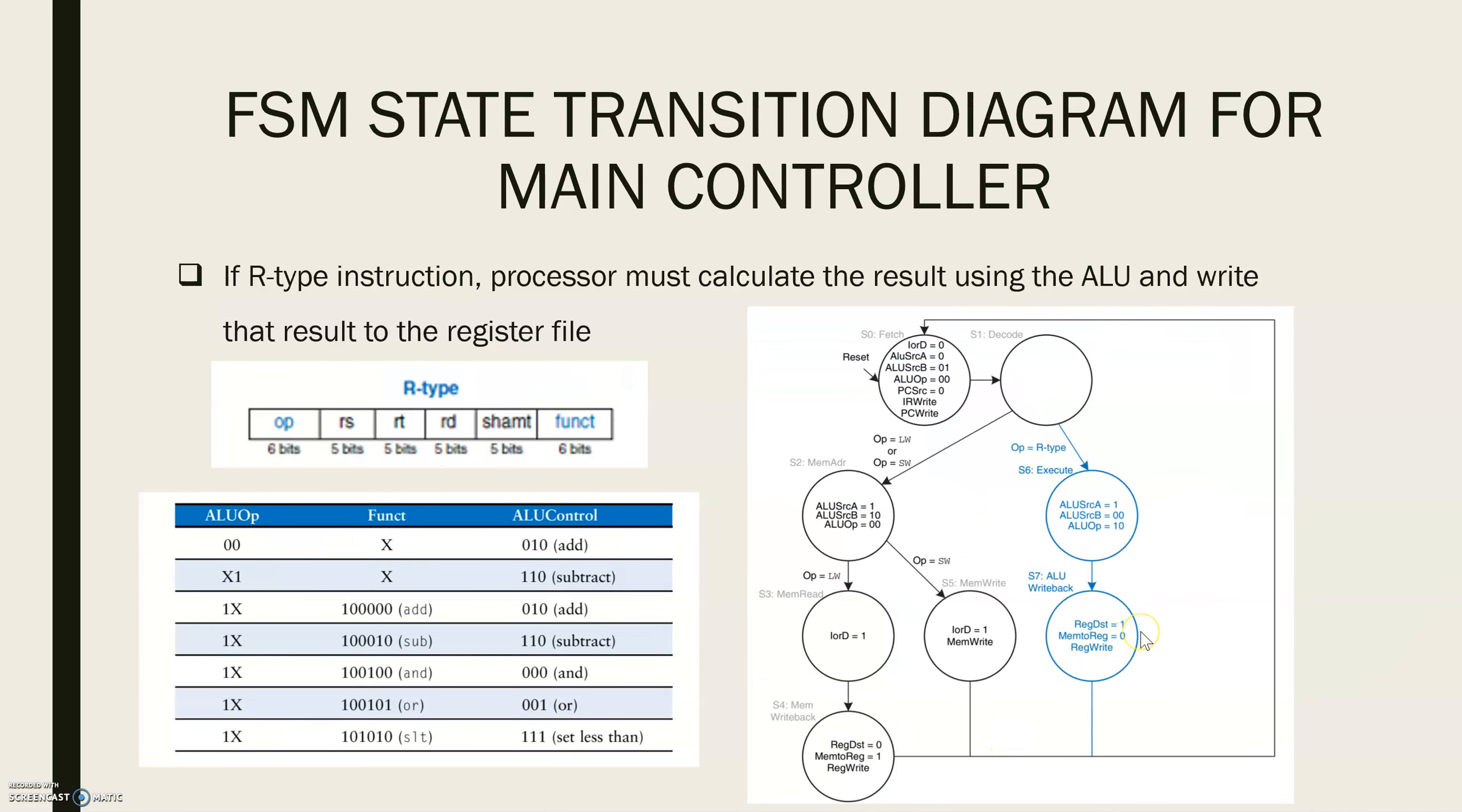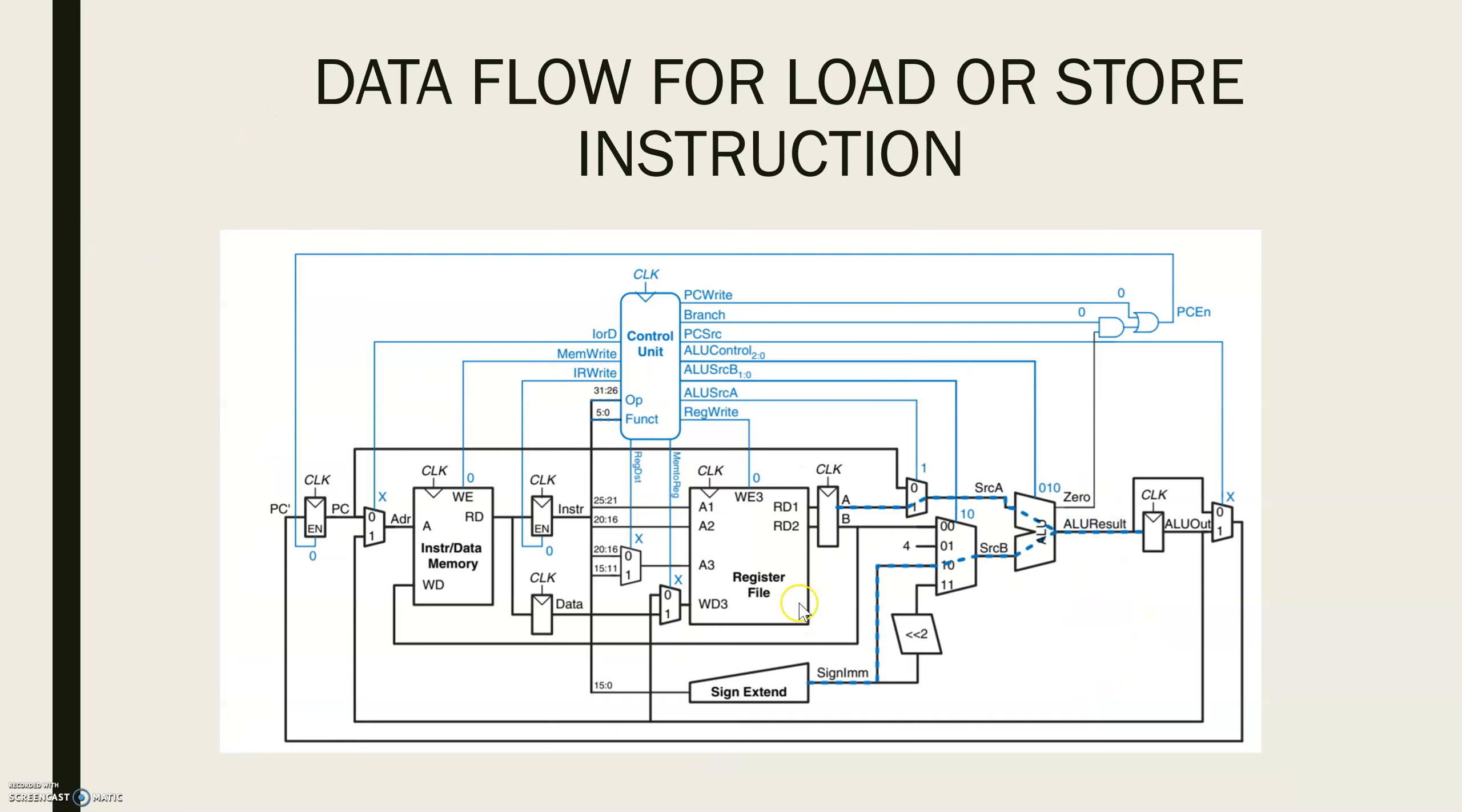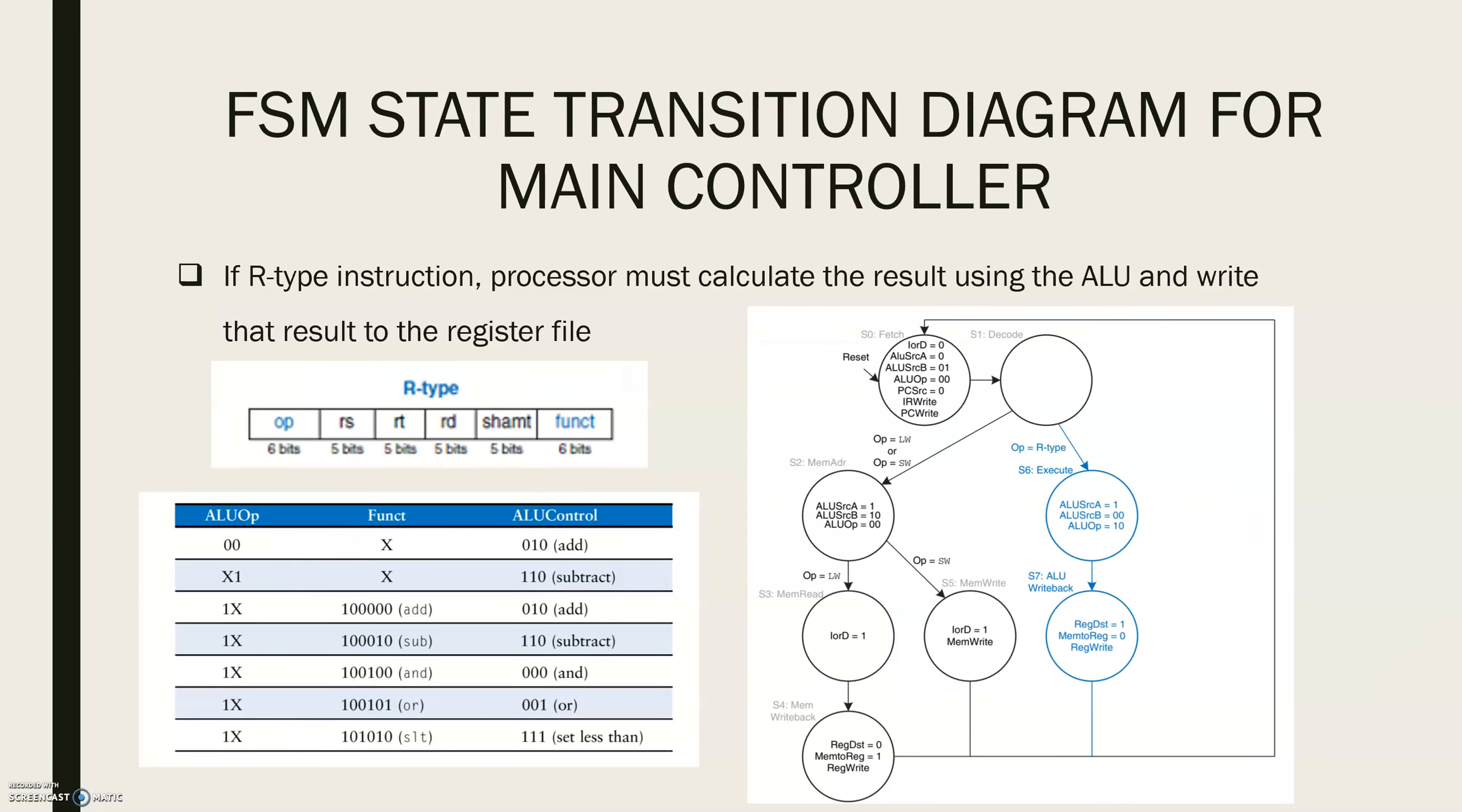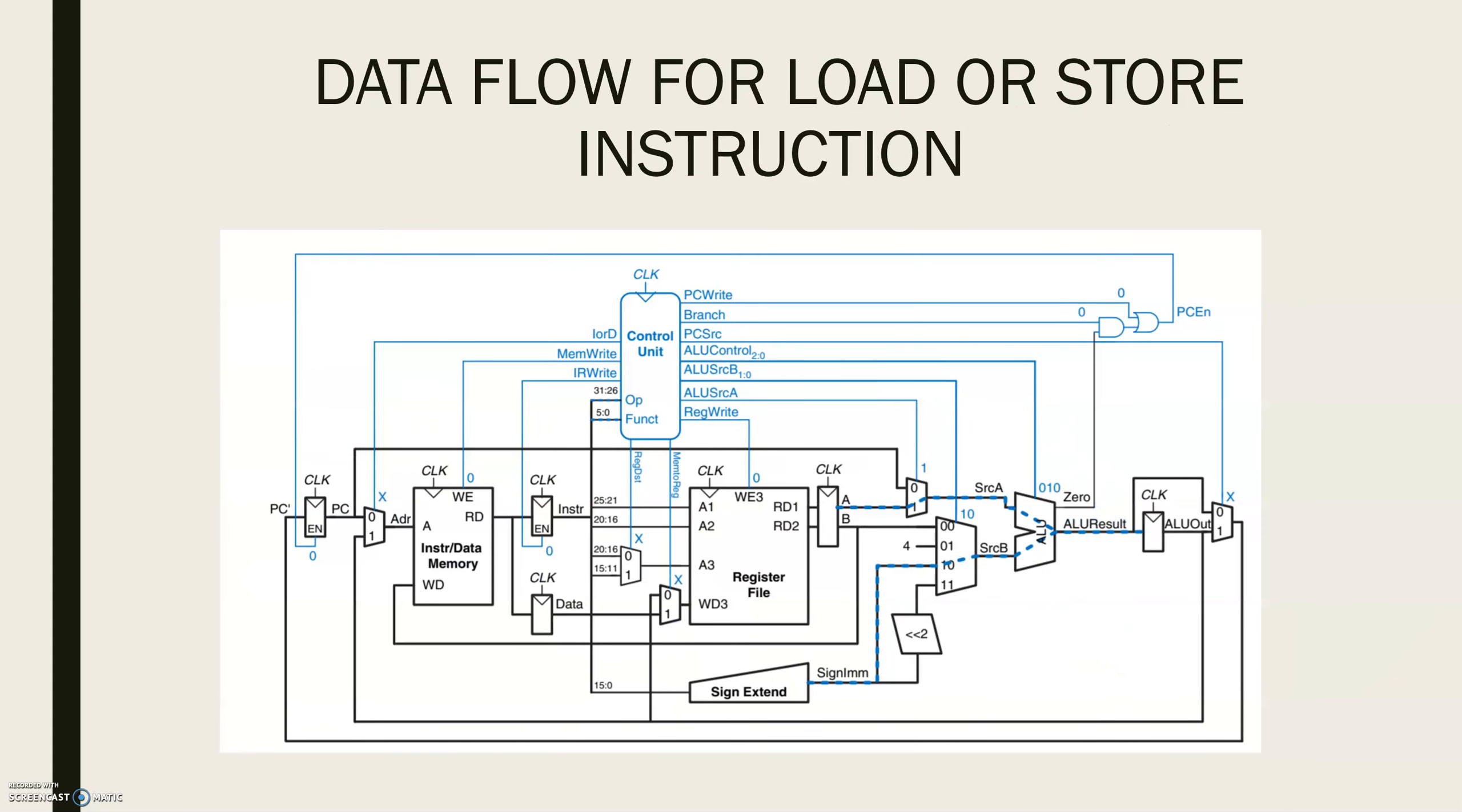MEM to REG is 0 because the WRITE data WD3 comes from ALU OUT. REG WRITE is asserted to write the register file. This will be 1.